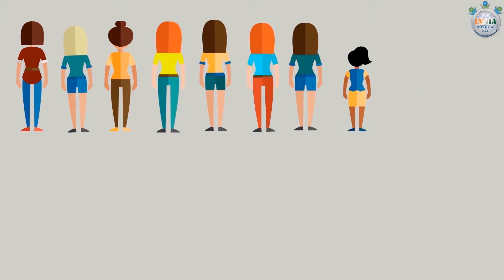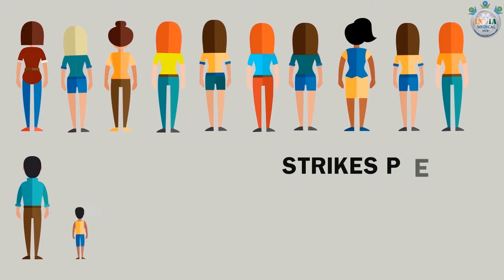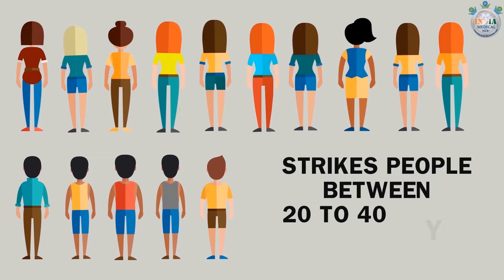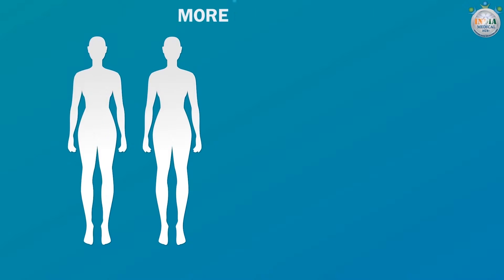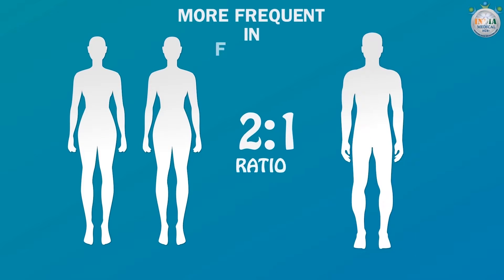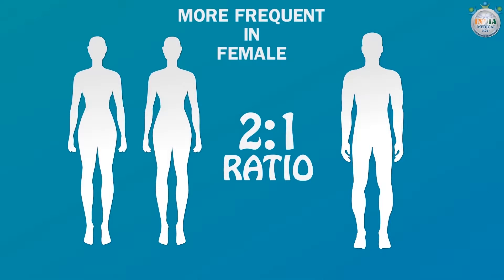Who gets multiple sclerosis or MS? MS is a long-term condition that primarily strikes people between 20 and 40 years of age. It is also more frequent in females, with a two-to-one ratio.